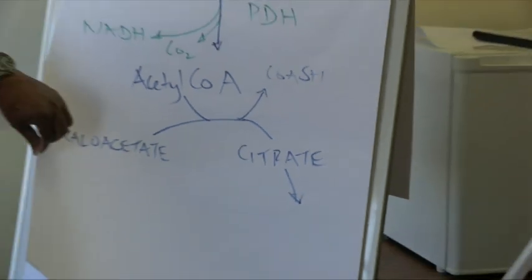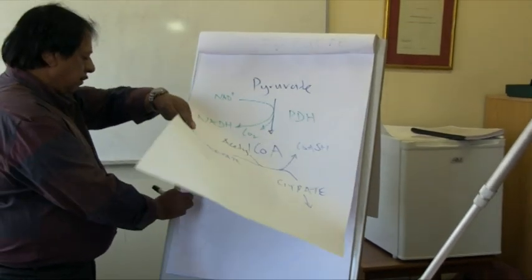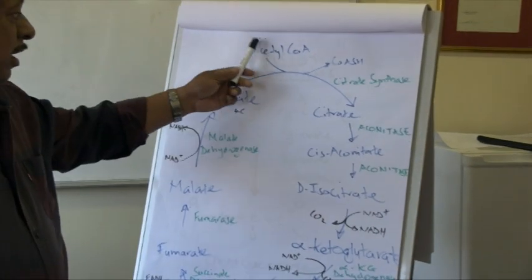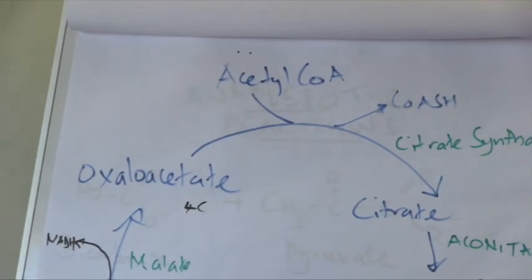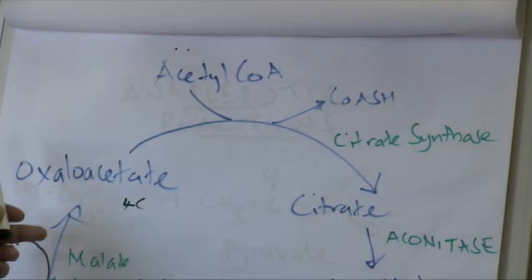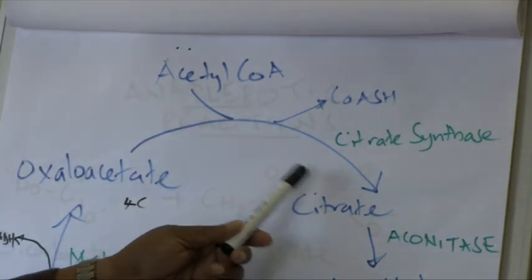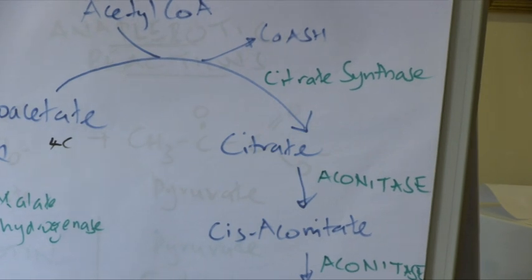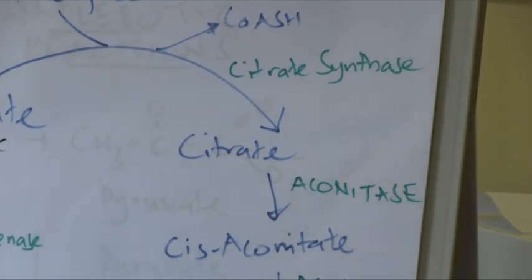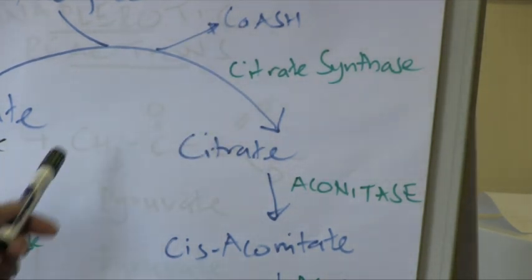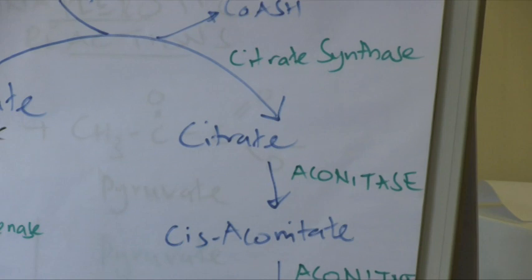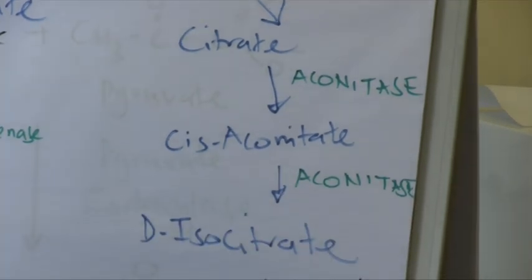Let's take a look at the TCA cycle. There's acetyl coenzyme A — we will follow the fate of those two carbons in the acetyl group. The acetyl group condenses with oxaloacetate to form citrate, a six-carbon compound, catalyzed by the enzyme citrate synthase, which is regulated by ATP and ADP. In a high-energy state with lots of ATP, the reaction is significantly decreased. Citrate is then acted upon by aconitase to form an intermediate called cis-aconitate, which is again converted by aconitase to isocitrate.